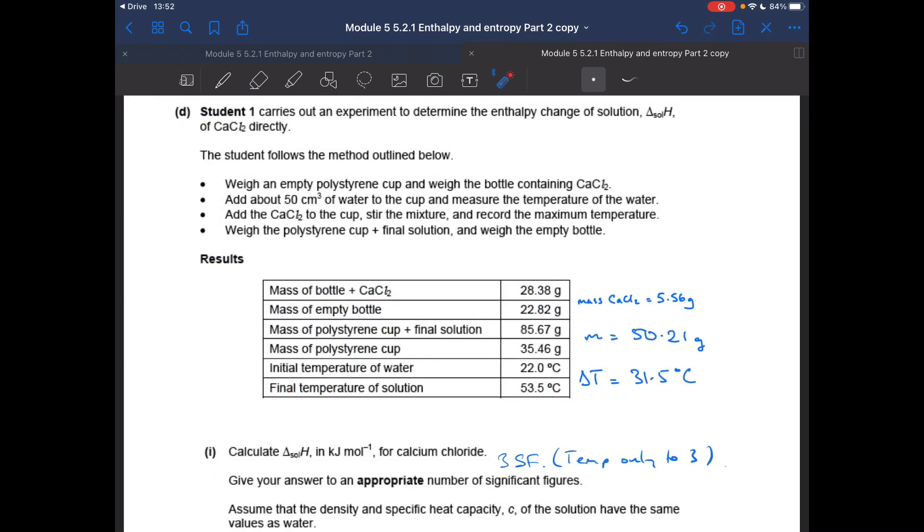So moving on to the calculation now, the first thing I've got to do is calculate the enthalpy change of solution in kilojoules per mole for calcium chloride. We've got to give our answer to an appropriate number of significant figures. So straight away, looking at the data there, we've got four significant figures and then three significant figures. So the appropriate number will be three because the temperature is only the three.